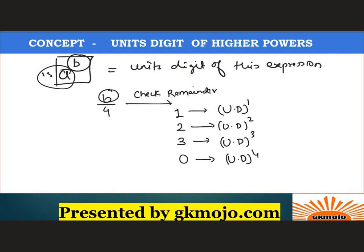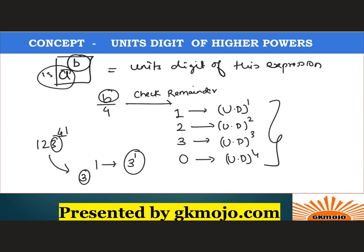If the remainder is 0, take the unit digit and raise it to the power 4. For example, if the number is 123 to the power 41, divide 41 by 4 — you get remainder 1. The unit digit is 3, so raise it to the power 1. The unit digit of this expression is 3. I hope you have understood the concept.